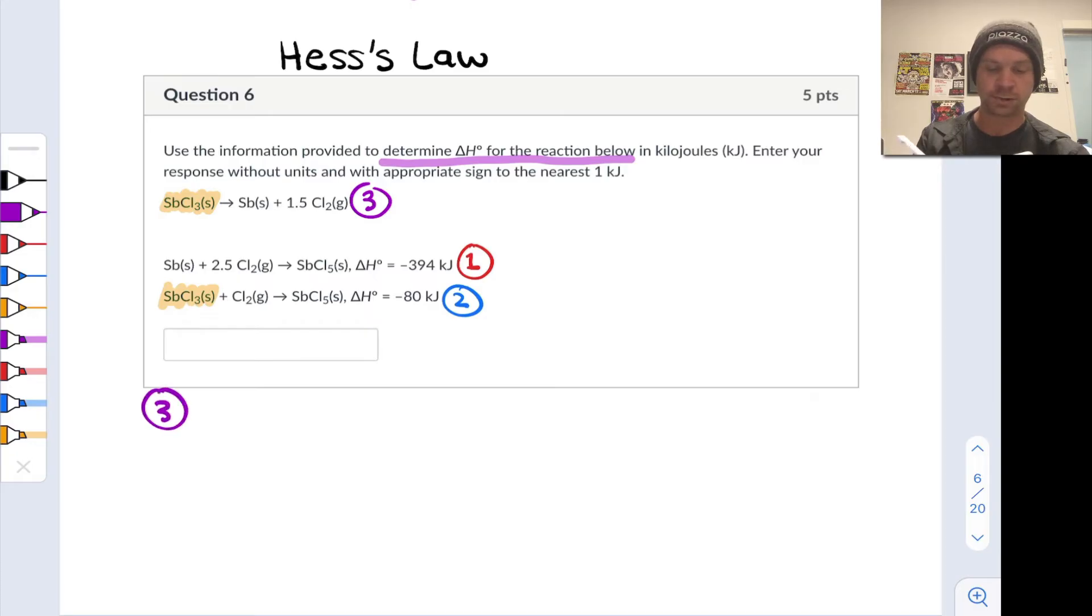In thinking about how to construct reaction three from the other two reactions, to satisfy the SbCl3 requirement—to put SbCl3 where it needs to be at the right scale—I just need one copy of reaction two. What about the Sb and the 1.5 Cl2 on the product side? Well, here again, if I just look at Sb, I've got antimony on the product side to the tune of one mole. Here I have antimony on the reactant side to the tune of one mole in reaction one. So to get antimony on the product side, what I need to do is negate reaction one, which corresponds to flipping the reactants and products.